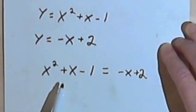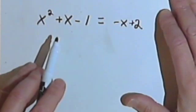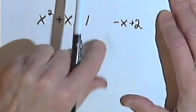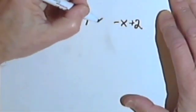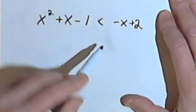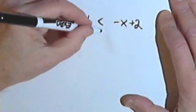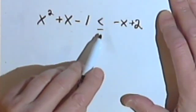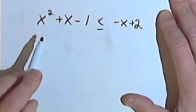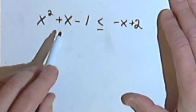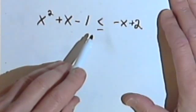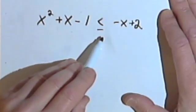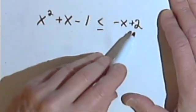If instead of that problem I had been given everything the same except that instead of an equal sign, I've got a less than or equal to sign — in other words, what if I had been given: x squared plus x minus 1 is less than or equal to negative x plus 2.